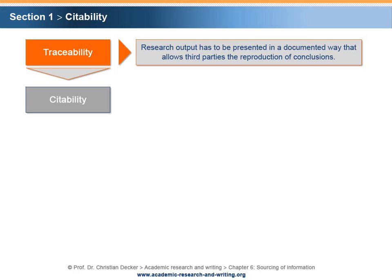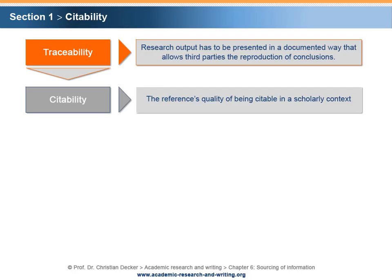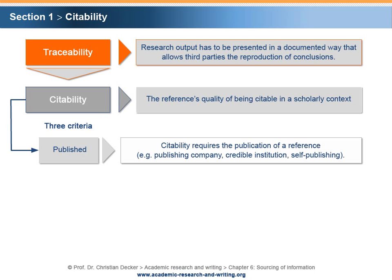Citeability means that a reference is citable in a scholarly context. A reference has to meet each of the following three criteria in order to be citable. First, a reference is citable if it has been published.